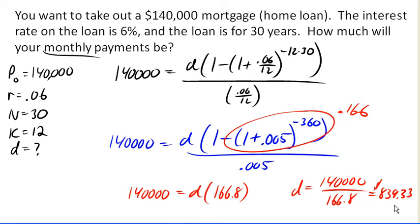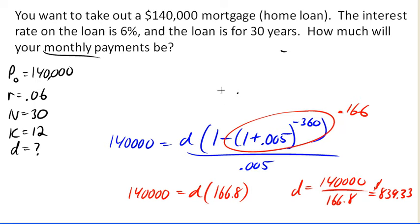And so we figured out that our monthly payments on this loan would be $839 a month for the 30 years. Now as we've often done, we might wonder how much interest are we going to pay on this loan over its life?